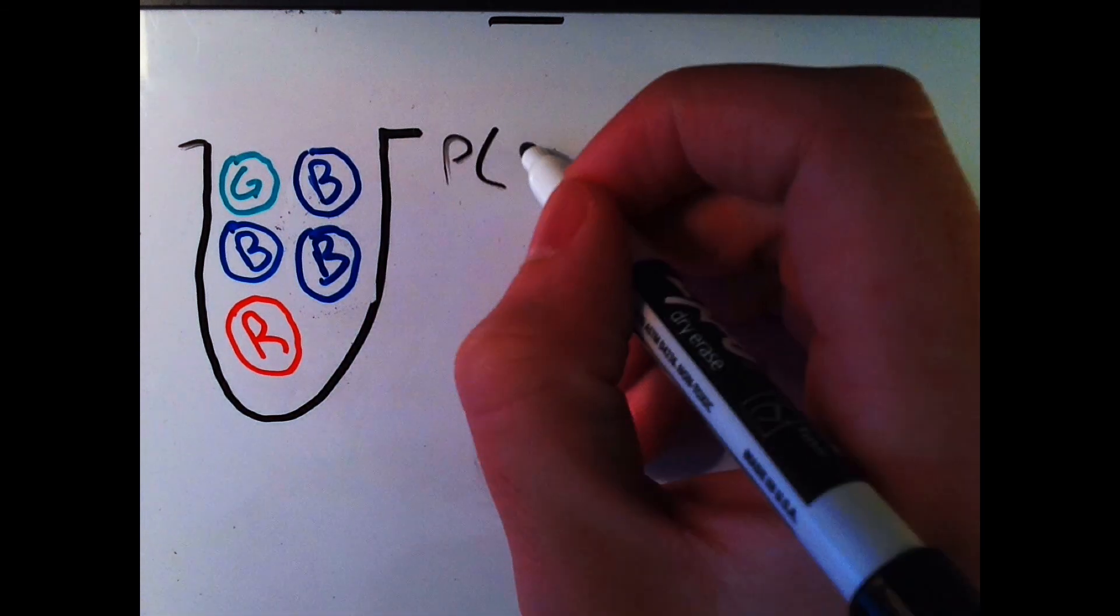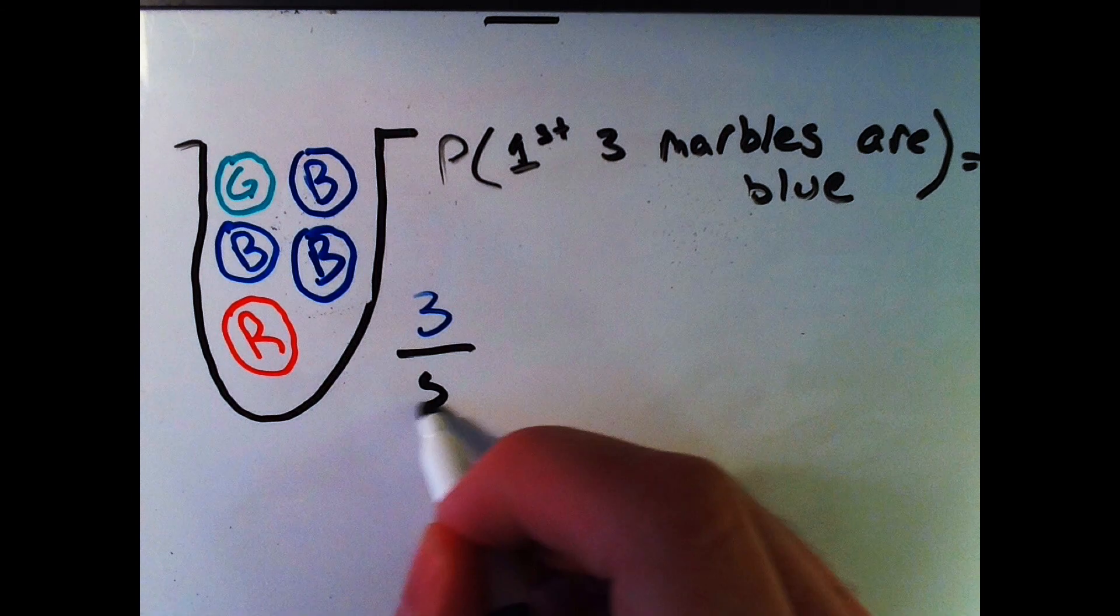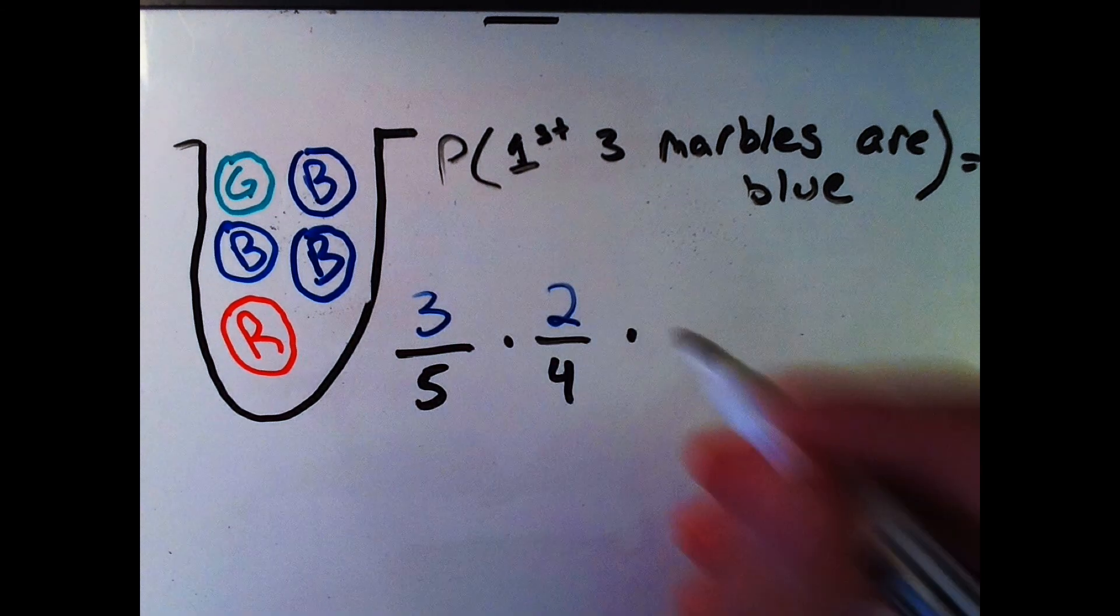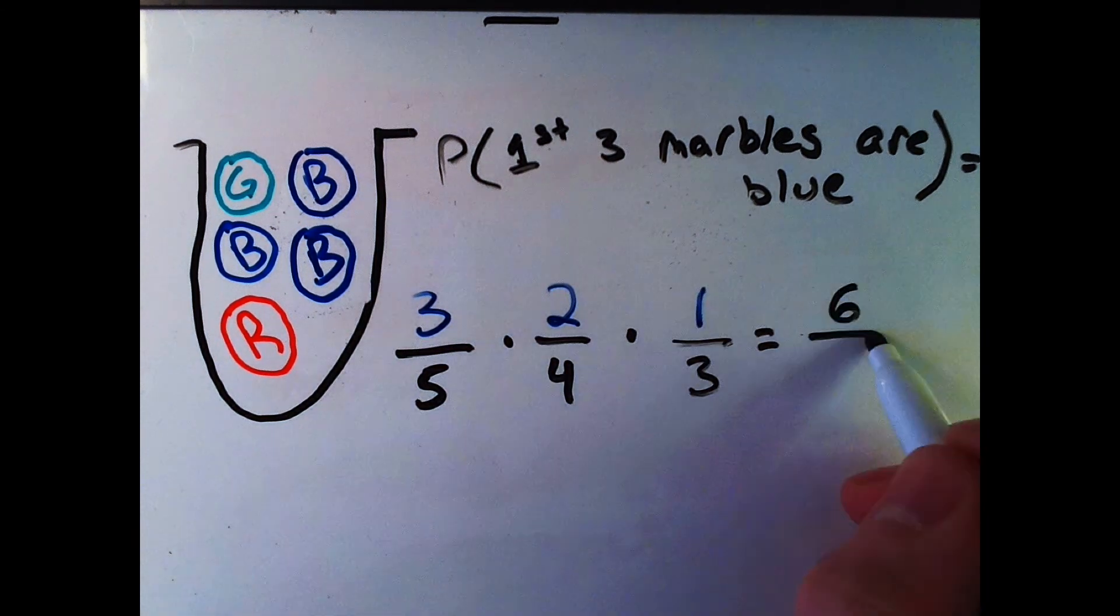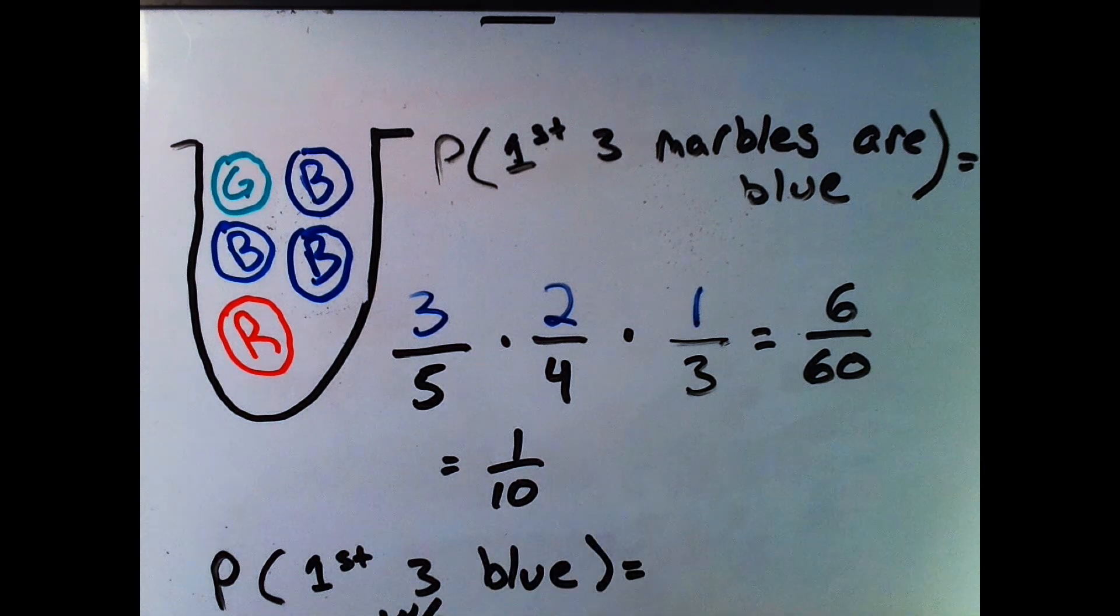So if we want to find the probability now of our original situation, but changed a little, where we have the probability of drawing three blue marbles in a row, we would take all the probabilities that we had found, multiply them together, to get one-tenth. So the probability of the first three marbles being blue is one over ten.